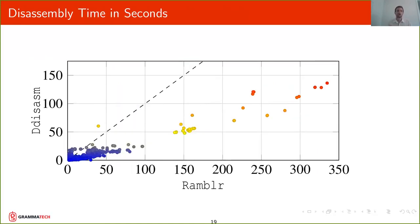Just to mention very briefly, we also measure the disassembly time of both tools. ddisasm is in most cases faster than Rambler, in many cases many times faster than Rambler. Everything below the diagonal line means that ddisasm is somewhat faster than Rambler in disassembly.